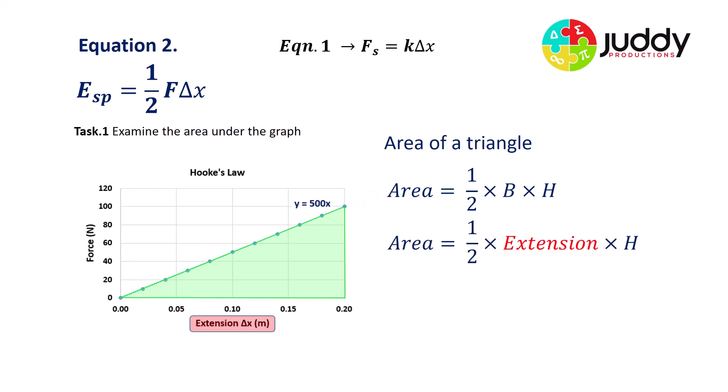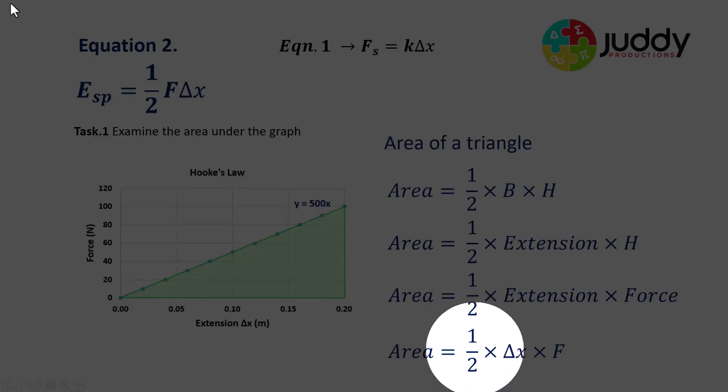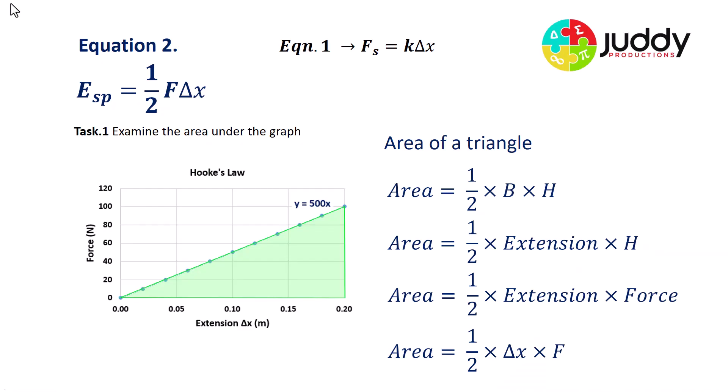Let's expand that one. The base of our graph is really a measurement of extension in meters delta X, and the height of our graph is a measure of force in newtons. So the area under this graph is going to be equal to a half delta X times F, which comes from extension times force. This is commonly rewritten in the following order: the area equals a half F delta X. So that's the equation to work out the area under the force extension graph.